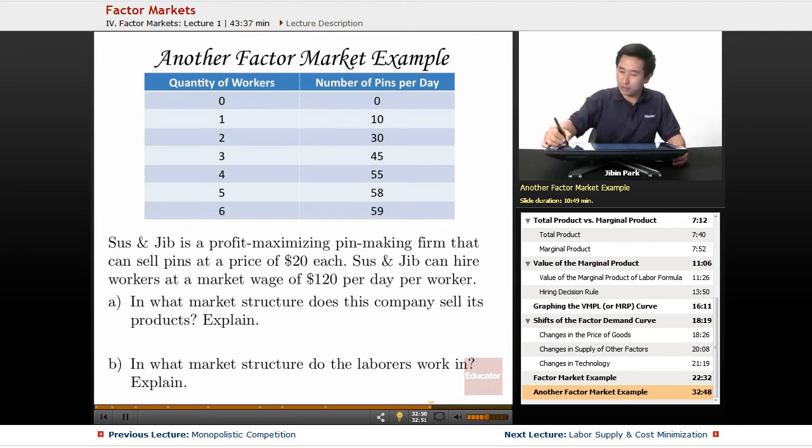Let's take another particular example. Let's say you have a company called Susan Jib. Susan Jib is a profit-maximizing pin-making firm that can sell pins at a price of $20 each. Susan Jib can hire workers at a market wage of $120 per day per worker.